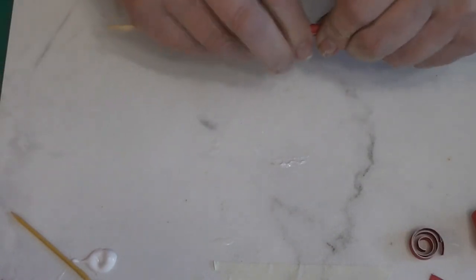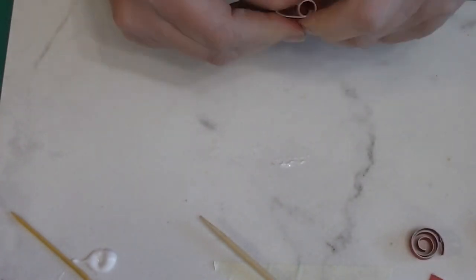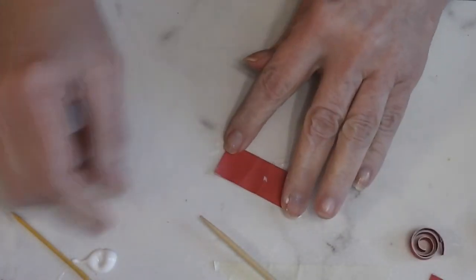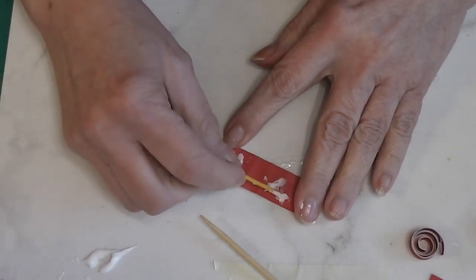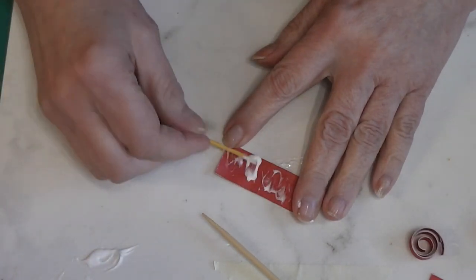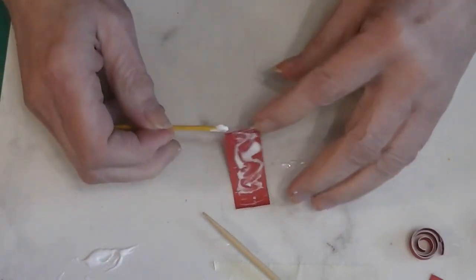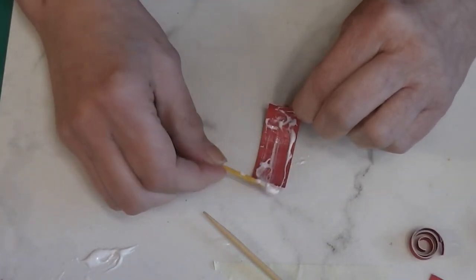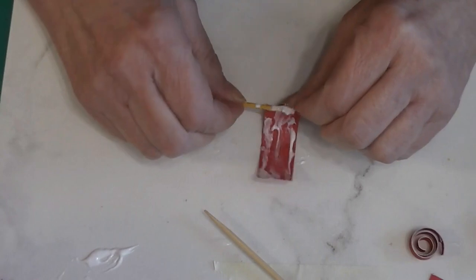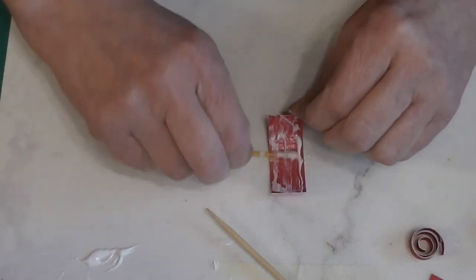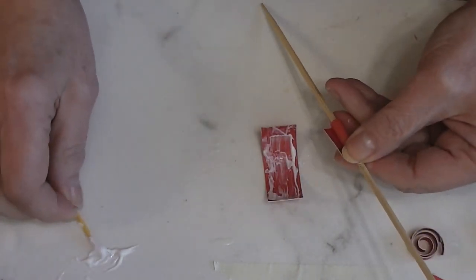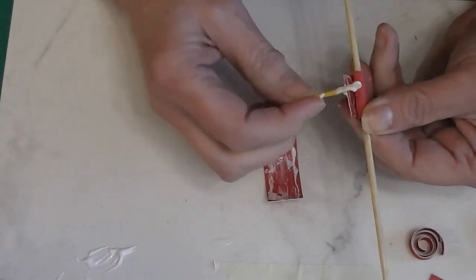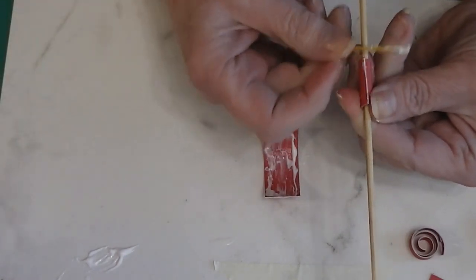Now I'm going to let that sit while I get glue on. Now we're going to glue the entire inside of this three-quarter inch piece. Again, we want to cover the whole inside but we don't want to put too much because we don't want it oozing out everywhere.